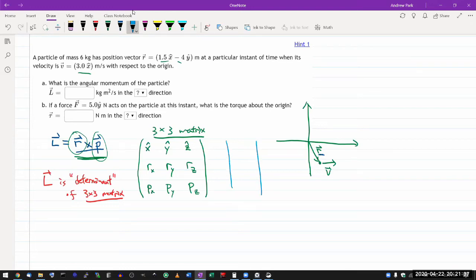You write two extra columns, or you copy over these first two columns. So that you have x hat, rx, px, you have y hat, ry, py.